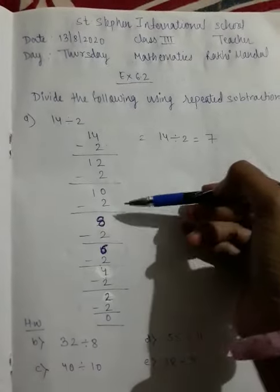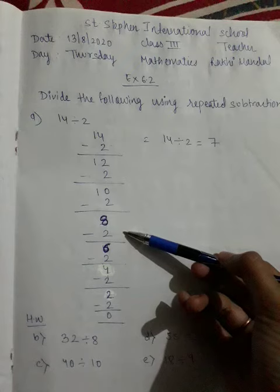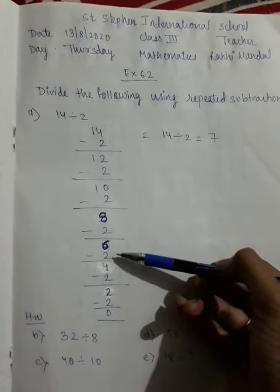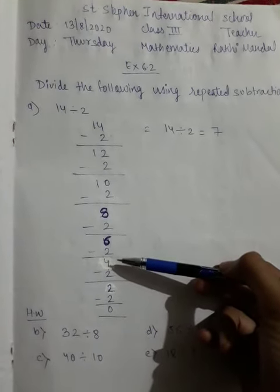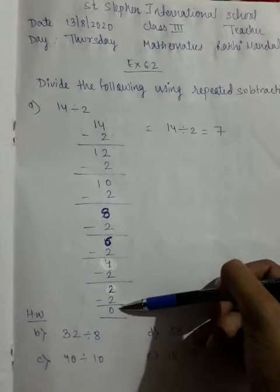Then minus 2 will be 10, then 8, then minus 2 will be 6, then minus 2 will be 4, then minus 2 will be 2, and last time remainder is 0.